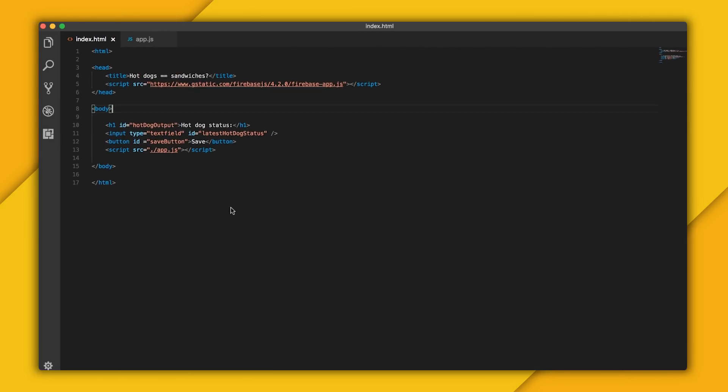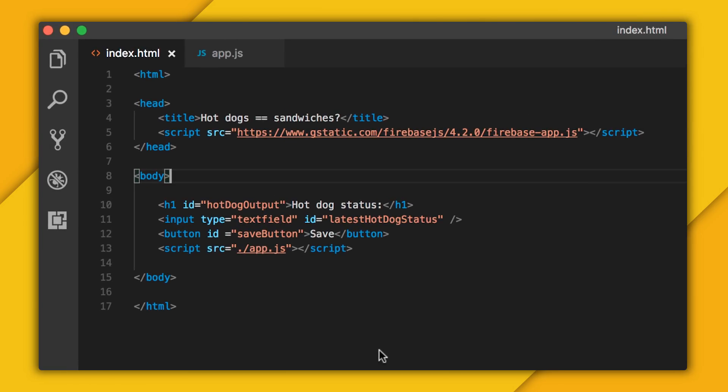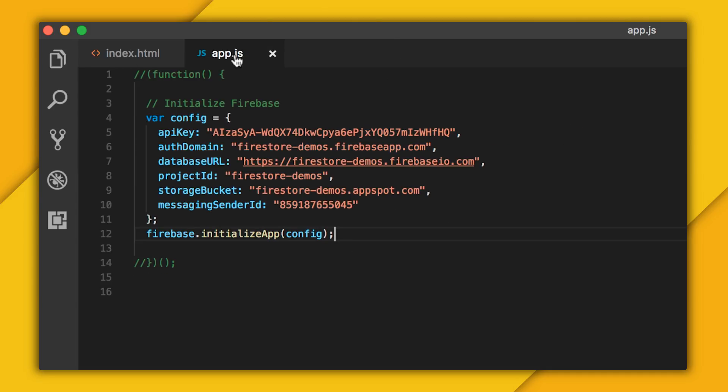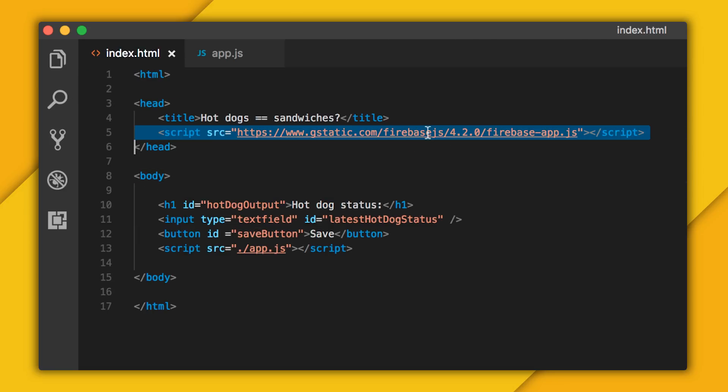So here's my index.html page where I've got all my elements created. And up here, I'm loading the Firebase library. Then over here is my app.js file where I'm configuring my Firebase project with the values that I got from the Firebase console. Actually, before I do anything else, I'm going to go ahead and include the Firestore component like so.